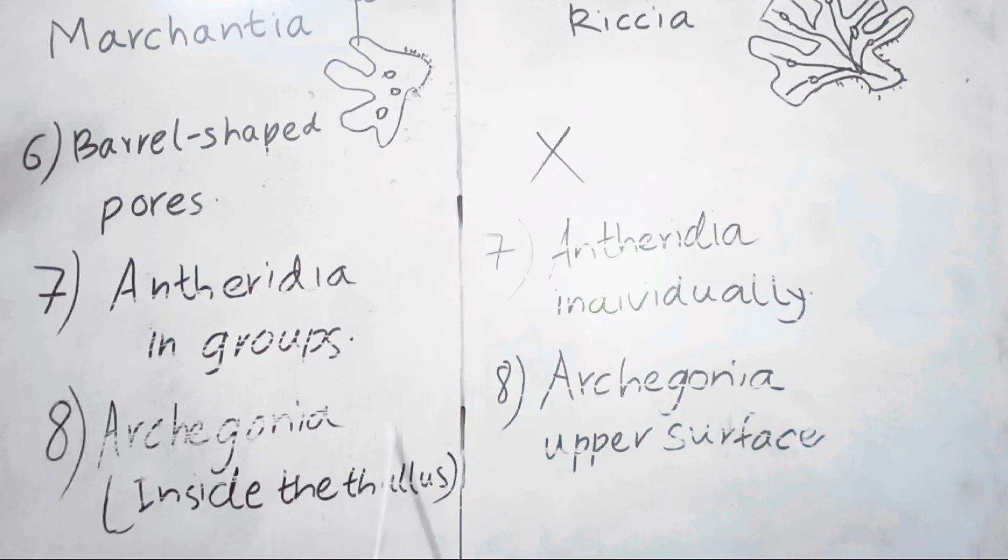Archegonia are female reproductive parts. Archegonia develop inside the thallus in Marchantia. Archegonia develop on the upper surface of the thallus in Riccia.